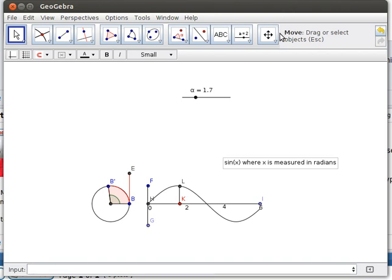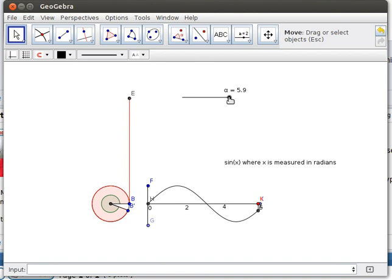We've looked at GeoGebra apps before. In this particular app I'll build a slider, alpha. Alpha can be anything from 0 up to about 6.